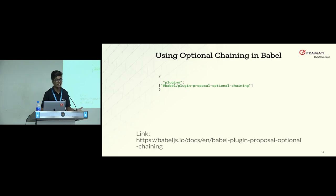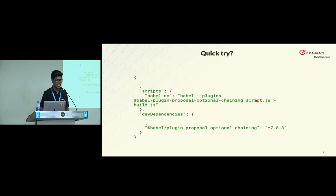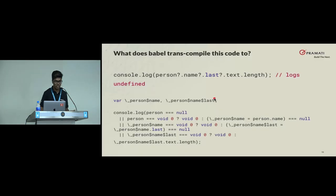But it's JavaScript, so we can do anything we want. Even before it's released, if you are using Babel compilers or transpilers, there is a plugin already available called the plugin proposal optional chaining, and you can start using it in your Babel code. There's a link for the plugin, and if you want to quickly try it, you can use Babel CLI and just use the command in your terminal to compile script.js to build.js. And if you want to integrate it in your package.json, you can write your own script and do that.